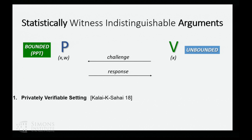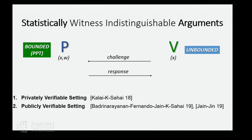So what I will talk about are two results that get statistical witness indistinguishability. One is in a joint work with Yael Kalai and Amit Sahai, and gives two-message WI in the privately verifiable setting. Using some tools from this work together with tools from recent work on instantiating Fiat-Shamir, we get, in a joint work with Badrinnarayanan, Fernando, Jain, and Amit Sahai, publicly verifiable two-message statistically witness indistinguishable arguments. This same result was also achieved in concurrent work by Abhishek Jain and Zeven Jain.